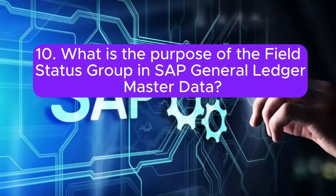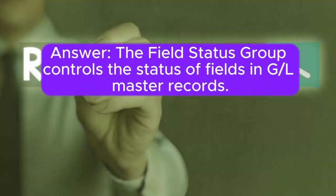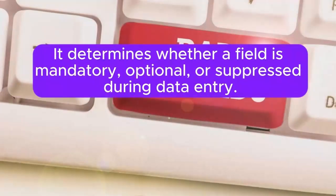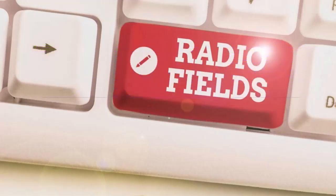Question 10: What is the purpose of the field status group in SAP General Ledger master data? Answer: The field status group controls the status of fields in General Ledger master records. It determines whether a field is mandatory, optional, or suppressed during data entry.